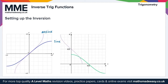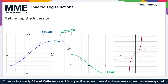For cos x, the green curve here is cos x, and this purple dashed line is arc cos x. And finally, for tan x, this is the red curve, and this purple dashed line is arc tan x.